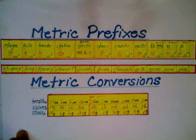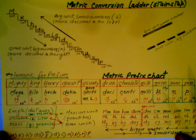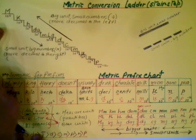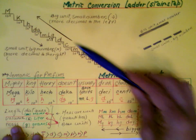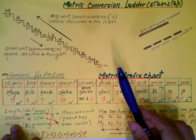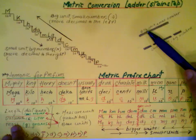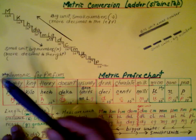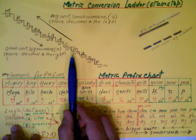Here is another version of the metric prefixes written as a ladder or stair step. Going down from top to bottom — from mega to pico — the units are becoming smaller. Going upward from pico toward kilo, the units are becoming bigger. When you have a smaller unit, the number has to be bigger, because we are talking about equivalence.